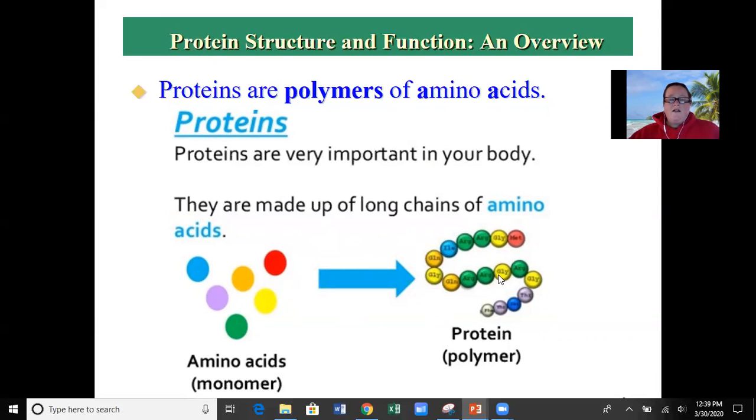So there are about 20 amino acids. And if you look on this picture, you can see a little M-E-T and G-L-Y and A-R-G. Those are three letter codes for each of the amino acids, of which we'll learn more about in depth later. But in general, proteins are polymers, and their smallest repeating unit is an amino acid.